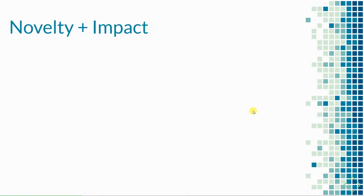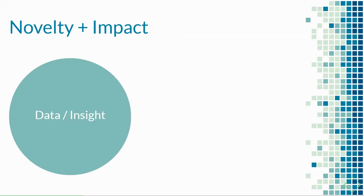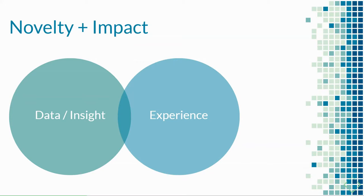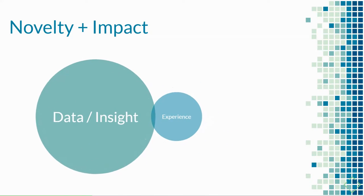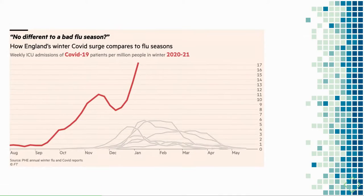To pick my top 30, I look for impact and novelty — they tend to come from data insight or the experience, and ideally both. Hannah's annual report is an example of the experience drawing me in much more than the data. And then on the other hand, this next chart from the Financial Times might seem boring.